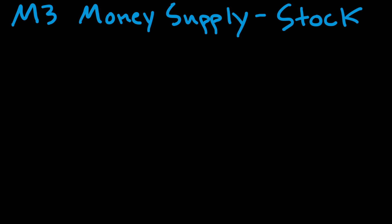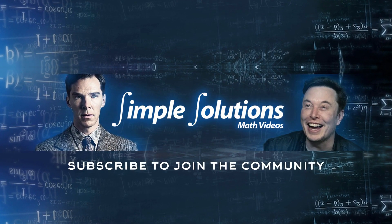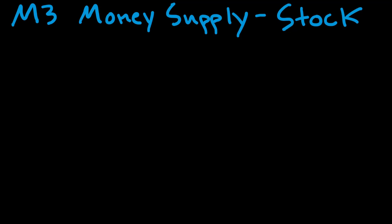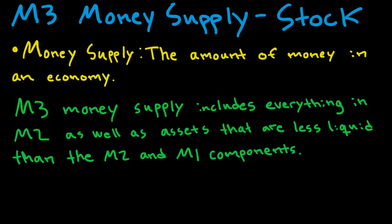First of all, we need to take a look at what is money supply. Money supply is basically the amount of money in an economy. But what is the M3 money supply? Well, the M3 money supply includes everything in M2 as well as assets that are less liquid than the M2 and M1 components.